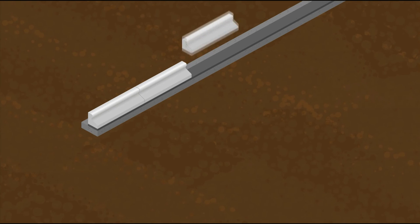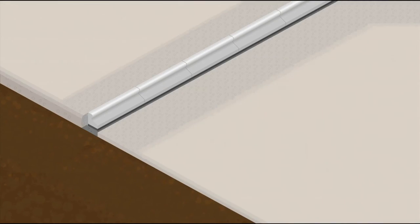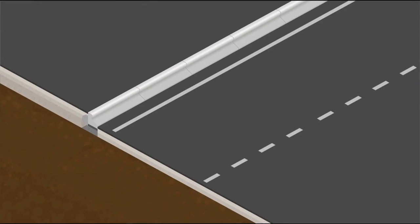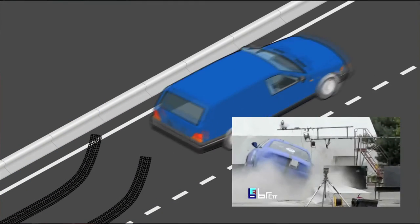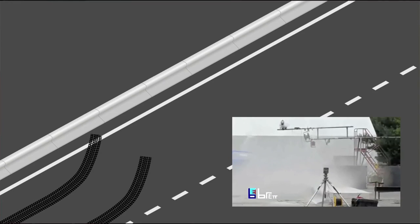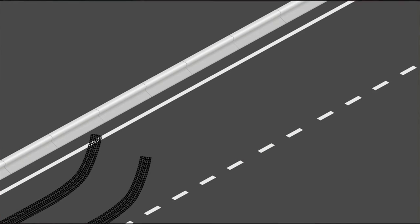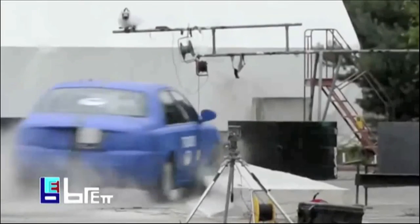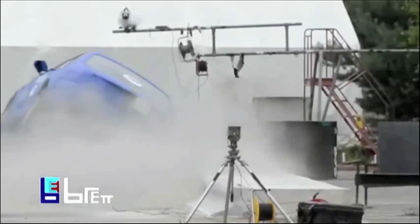Here we can see the TRIEF redirectional kerb doing its job during a test at the Transport Research Laboratory, where a 1500kg car strikes at 50mph. During the test sequence, none of the wheels of the vehicle passed over or under the safety barrier, critically reducing the risk to pedestrians and structures beyond.